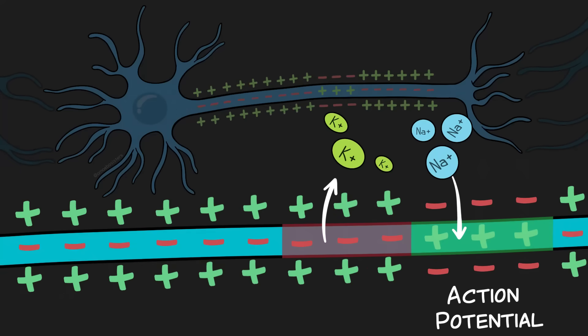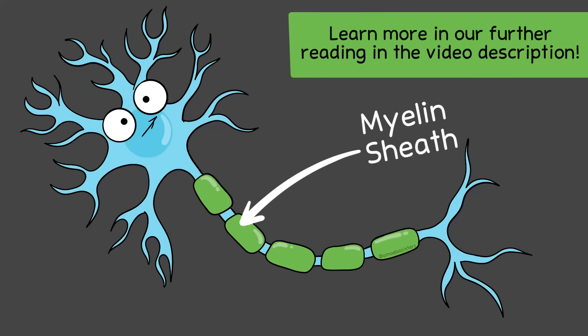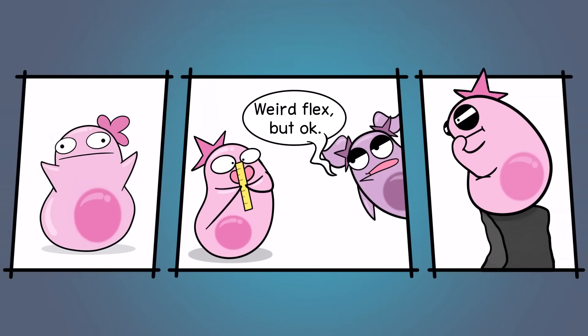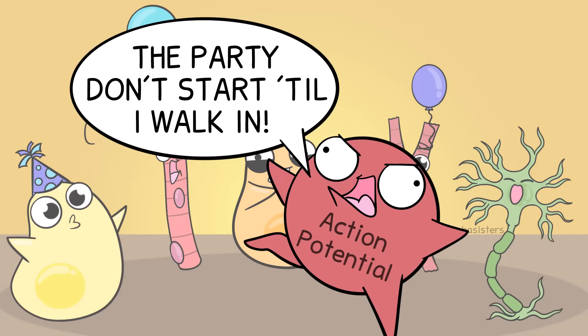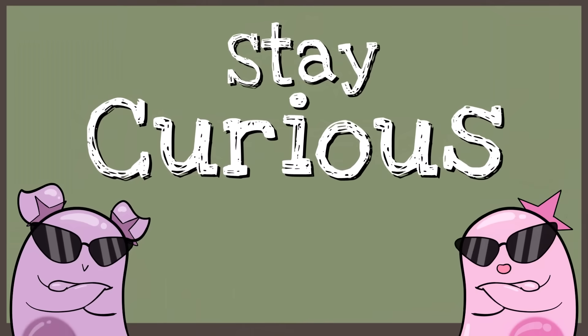Many neurons are insulated with myelin, and the spread of an action potential in myelinated neurons is a little different — see our further reading in the description. So many things we do every day — moving, thinking, catching falling rulers — depend on excitable cells. And those excitable cells will always rely on the action potential. That's it for the Amoeba Sisters, and we remind you to stay curious.